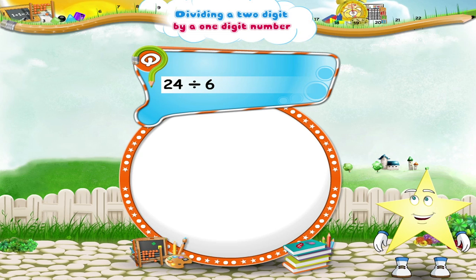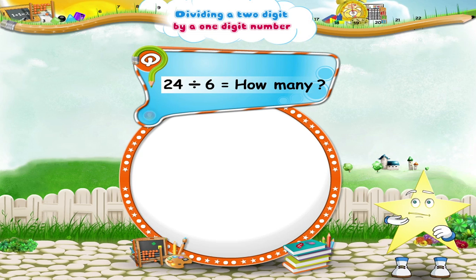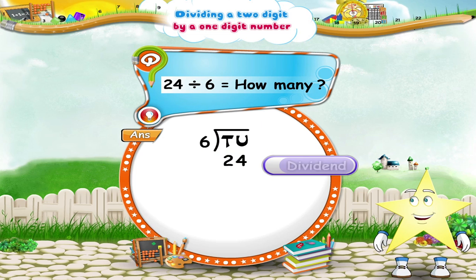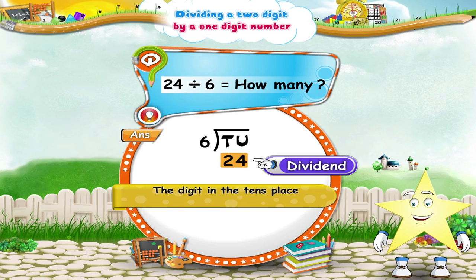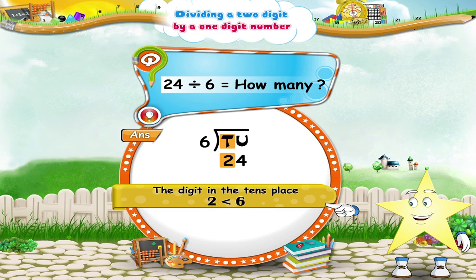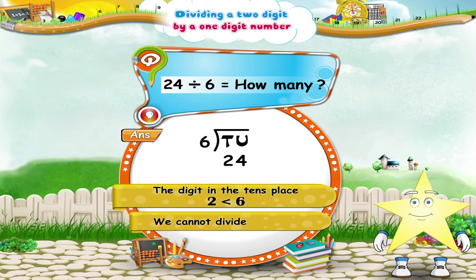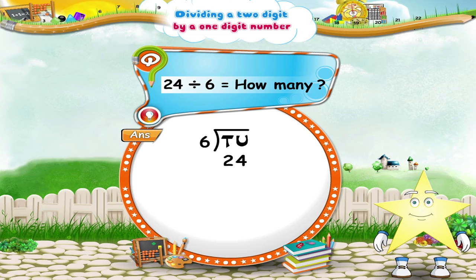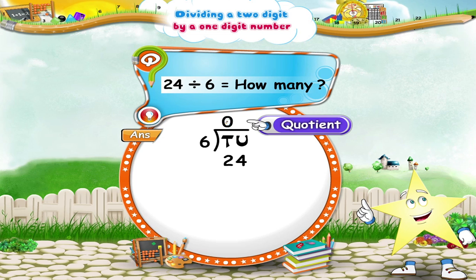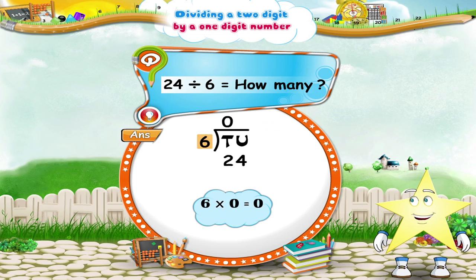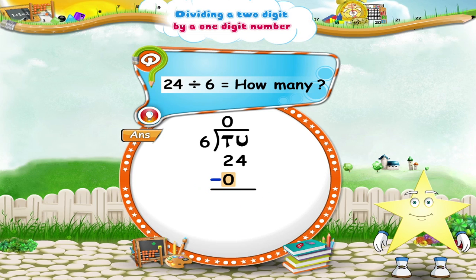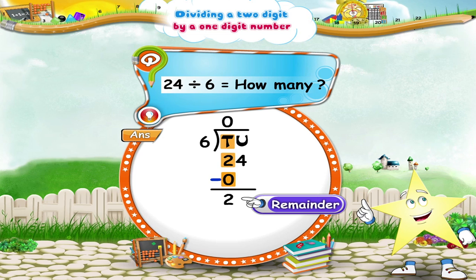24 divided by 6 equals how many? In the dividend 24, the digit in the tens place, 2, is smaller than the divisor 6. So we cannot divide 2 tens by 6. Hence, we write 0 above the line in the quotient. The product of 6 and 0 is 0. Subtract this product from 2 tens. The remainder is 2 in the tens place.